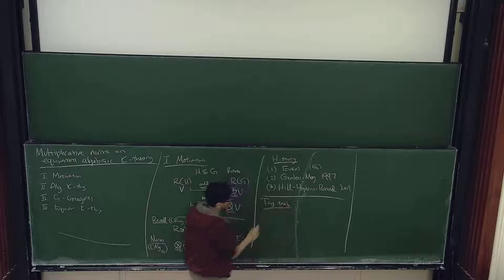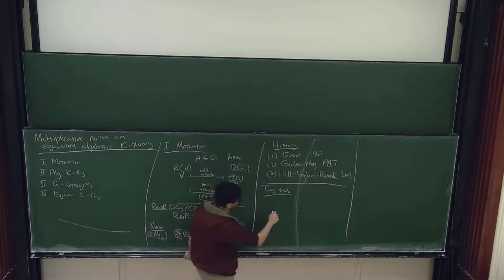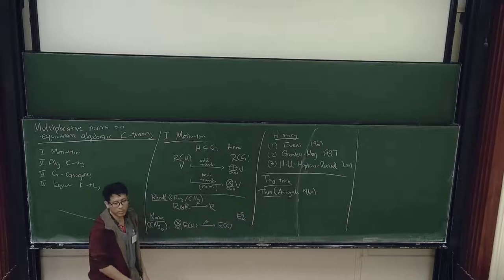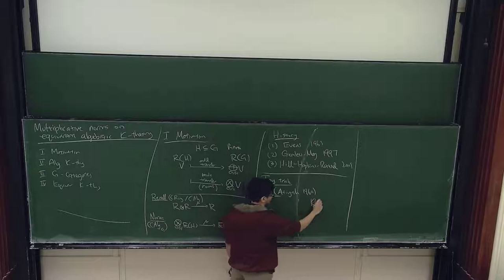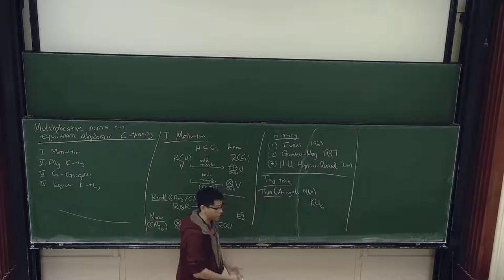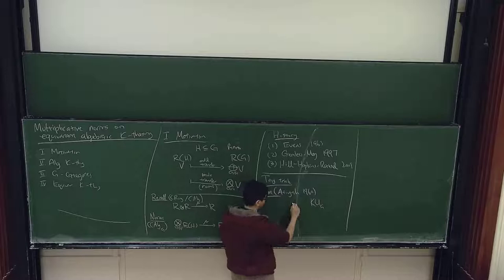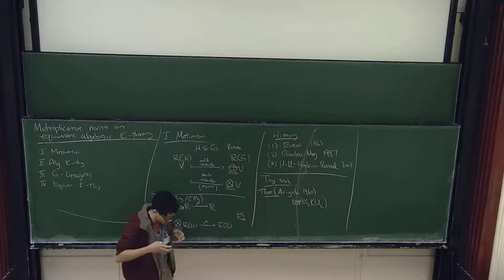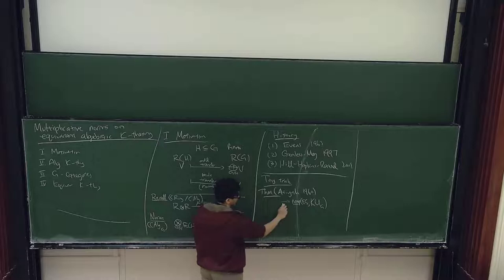Let me give a more mathematical motivation — a toy trick. There's this famous Atiyah-Segal completion theorem, which says that Segal's complex equivariant K-theory, when you Borelify it — essentially forgetting all higher fixed points and remembering only KU with trivial G-action — this form of completion is equivalent to the I-adic completion where I is the augmentation ideal.